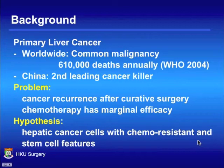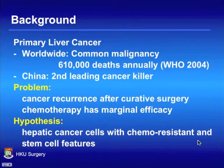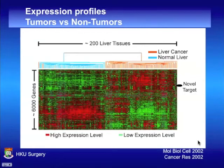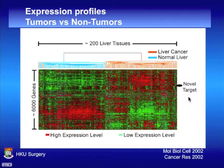Primary liver cancer is a common cancer worldwide. The major problem is cancer recurrence after curative surgery, and chemotherapy has marginal efficacy. We therefore hypothesize that hepatic cancer cells have chemoresistance and stem cell features. In our early studies, we examined the gene expression profiles of liver cancers and looked for novel molecular targets from genes that are overexpressed in cancer tissues.